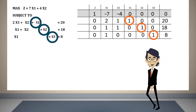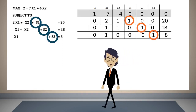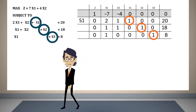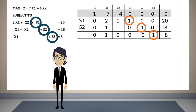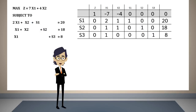These variables are called basic variables. In this case, s1 will be basic in the first row, s2 will be basic in the second row, and s3 will be basic in the third row. If s1 is 20, s2 is 18, and s3 is 8, then the value of x1 and x2 is 0, and therefore the value of z is also 0. We will try to increase z by making x1 or x2 greater than 0. To know which variable should increase, we observe the objective function row and search for negative numbers, selecting the smallest.